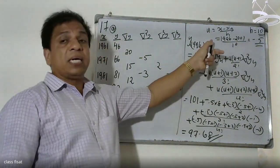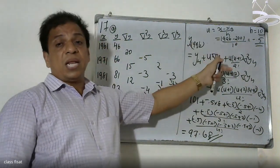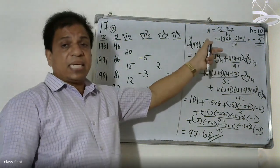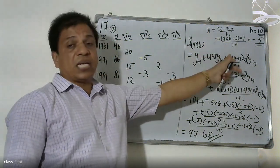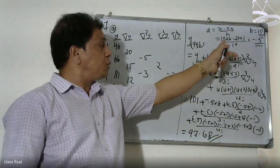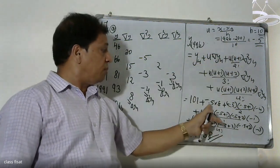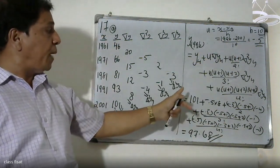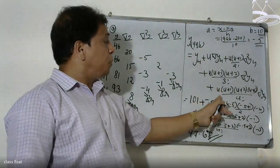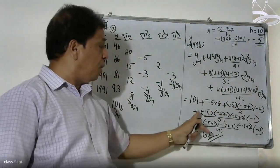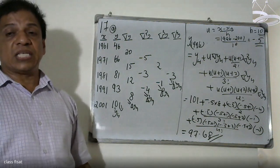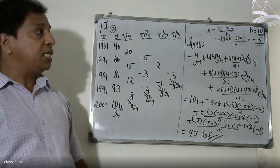We have to calculate u = (x - xₙ)/h, and then substitute the value of u into the formula to get the answer 97.68.